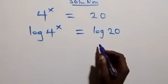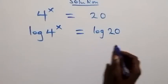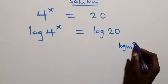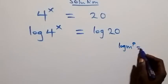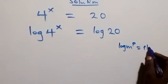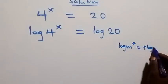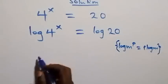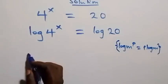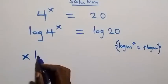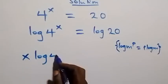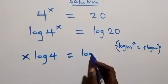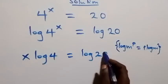Following the power rule of logarithms — that is, log m raised to power p can be written as p log m — the power x comes down, and this becomes x log 4 equals log 20.